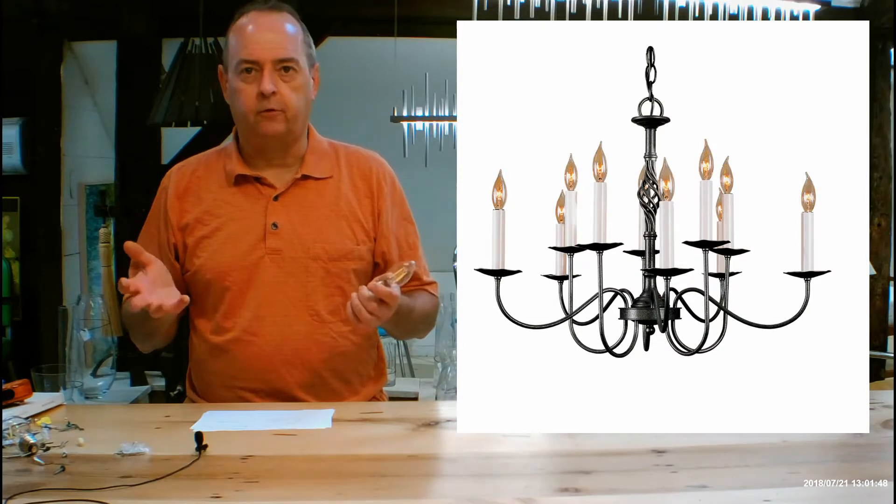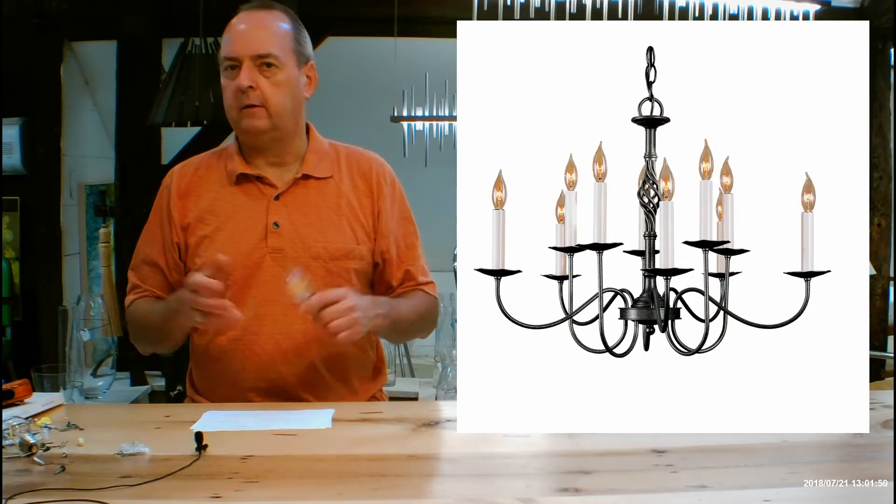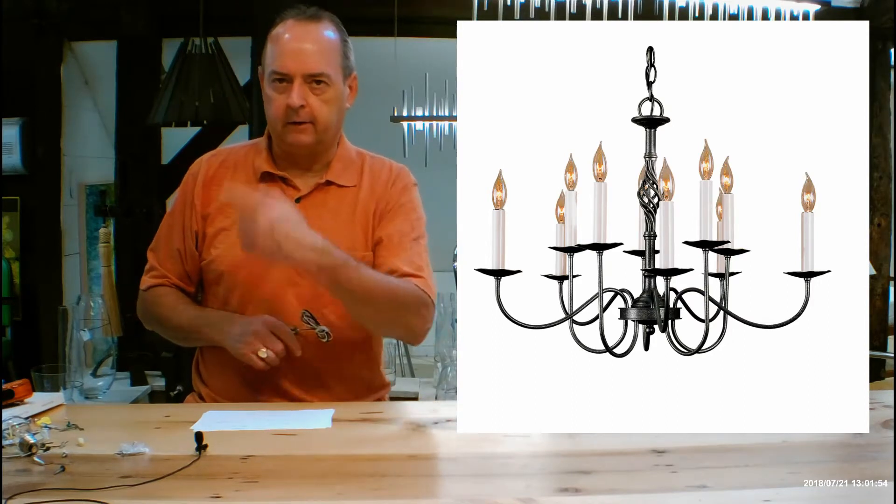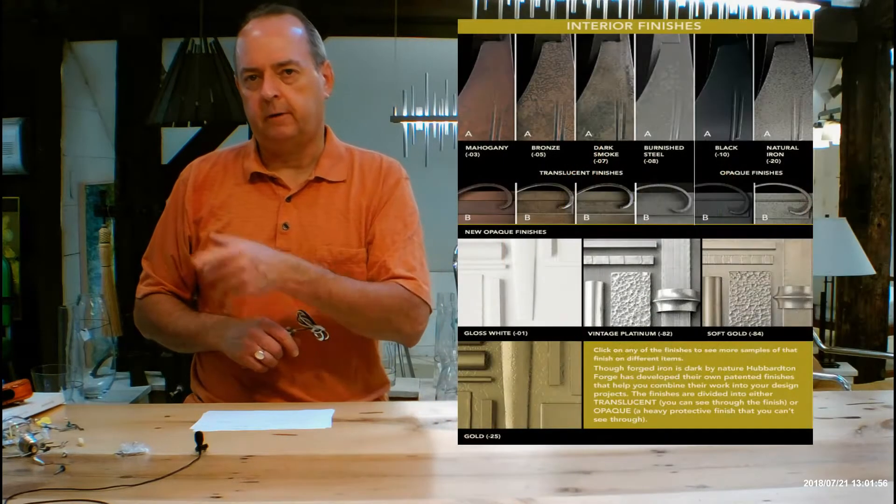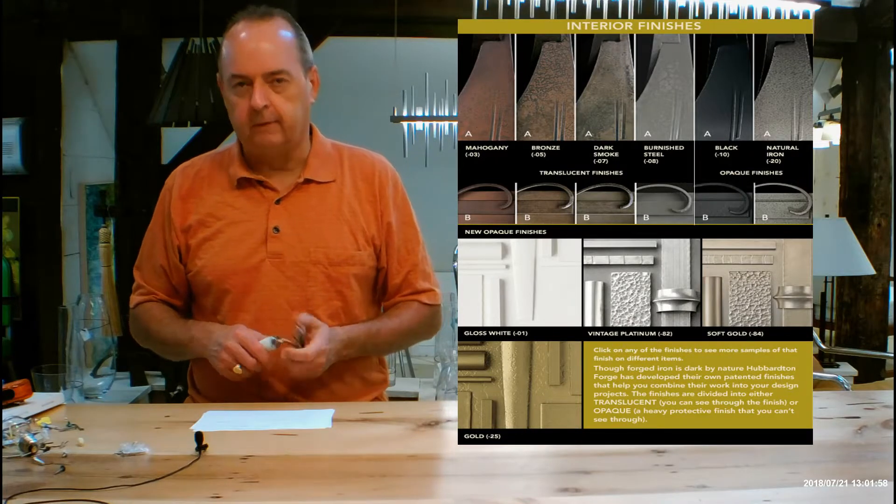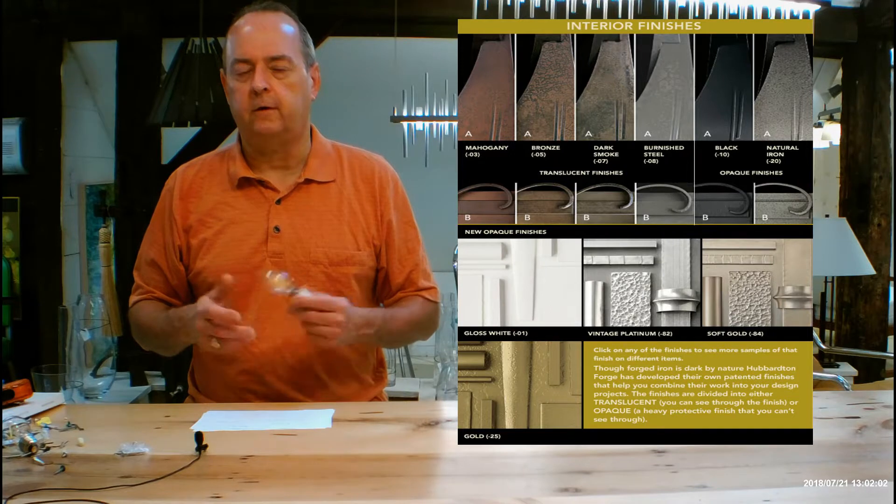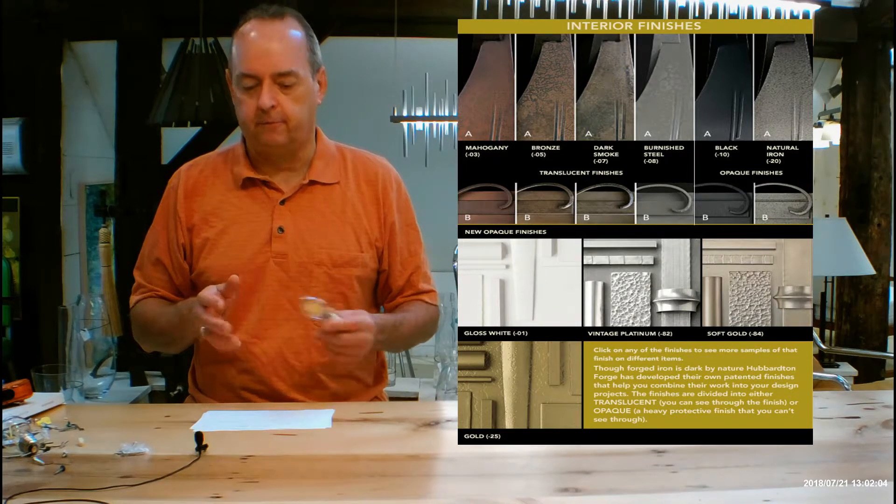This is a more traditional piece, obviously. You can tweak this with finishes, and we have a great finishes help guide. It's on the left-hand side of your screen in those red tabs with the pictures. You're going to see a video of me talking about the differences in Hubberton Forge finishes and how they look on different types of forging.